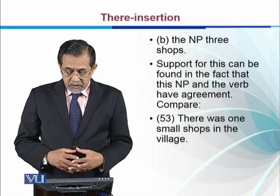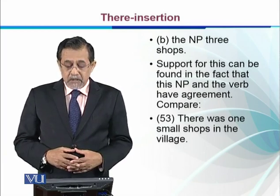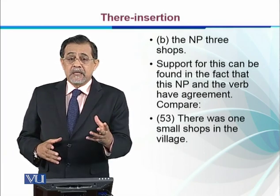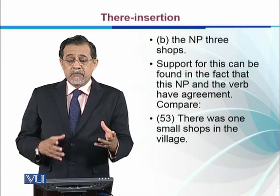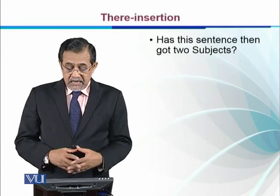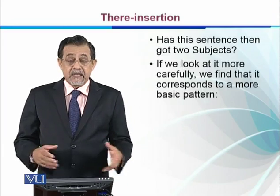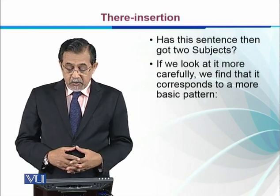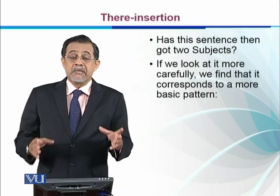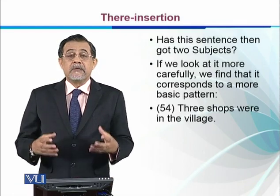'There was one small shop in the village.' If we look at this sentence, we find there is a singular verb which goes with 'shop.' Has this sentence got two subjects? Obviously there has to be one. If we look more carefully, you find that it corresponds to a more basic pattern: 'Three shops were in the village.'